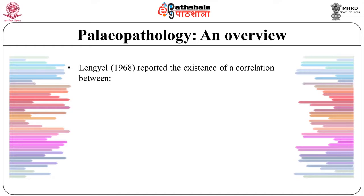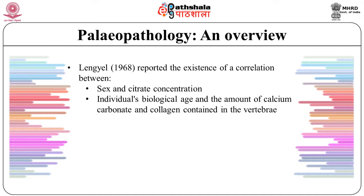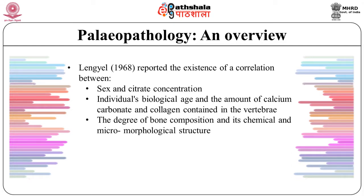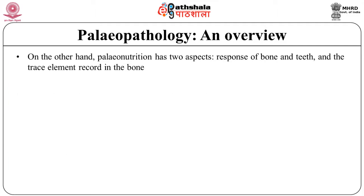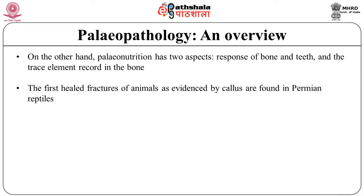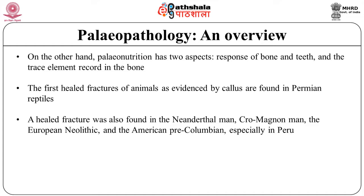Lenzel reported the existence of a correlation between sex and citrate concentration, the individual's biological age and the amount of calcium carbonate and collagen contained in the vertebra, and the degree of bone composition and its chemical and micro-morphological structure. Anthropologists have been interested in human well-being as a balance of mankind with disease, parasites and environmental stresses. Paleonutrition has two aspects: the response of bone and teeth, and the trace element record in the bone. The first healed fracture of animals, evidenced by callus, is found in Permian reptiles. A healed fracture was also found in Neanderthal man, Cro-Magnon man, European Neolithic, and American Pre-Columbian populations, especially in Peru.